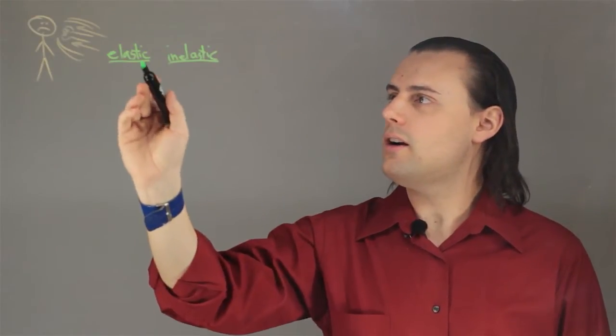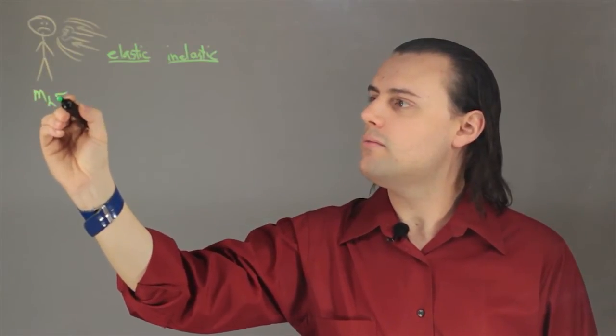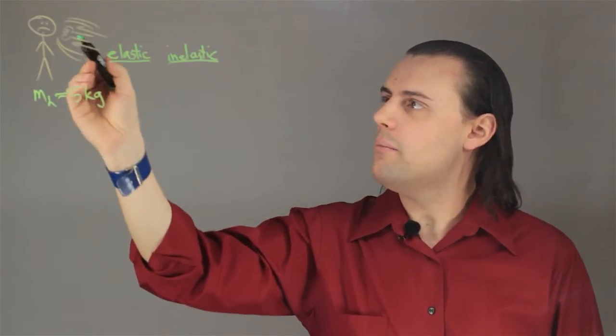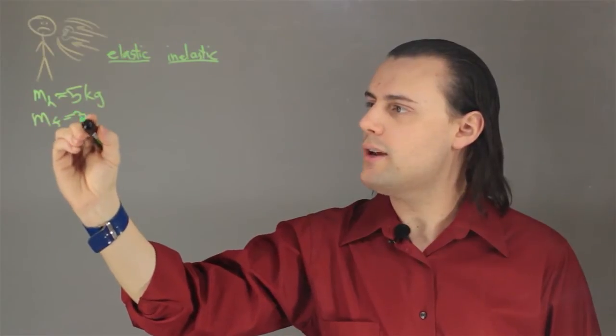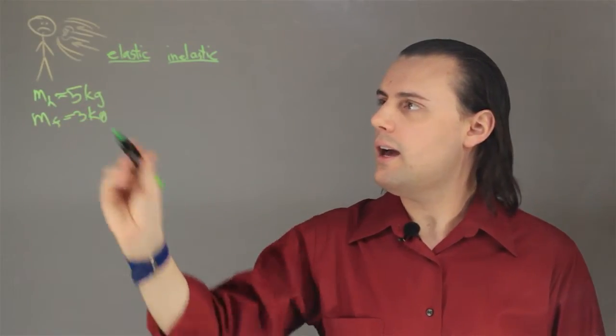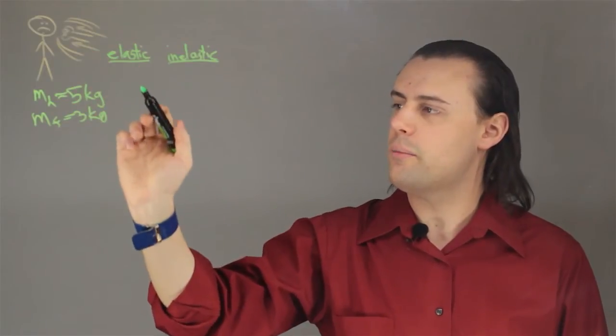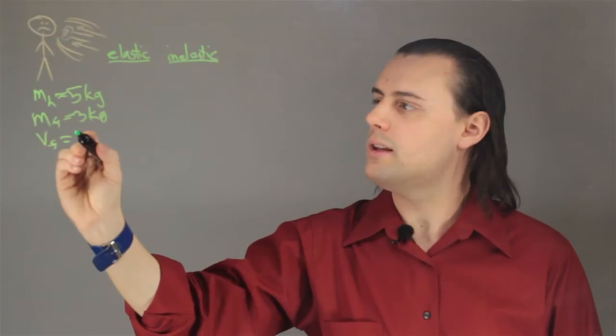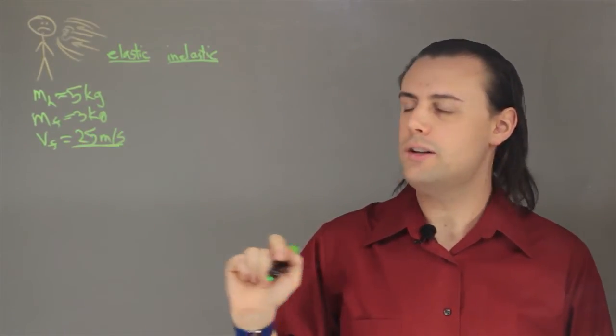Let's consider a mass of the head to be, say, five kilograms, and a mass of the fist and part of the arm to be equal to three kilograms. And let's say that the fist and the arm are coming in for the punch with a velocity of approximately 25 meters per second. This is a very fast punch.